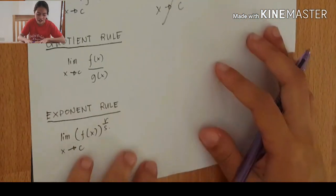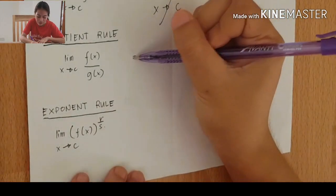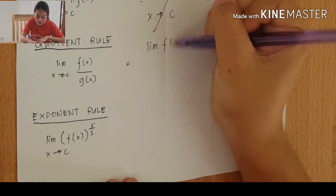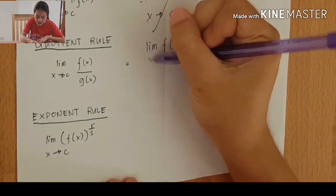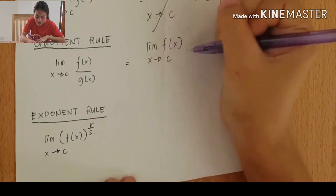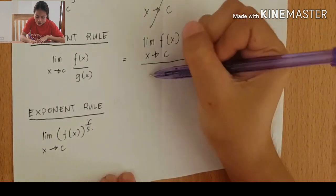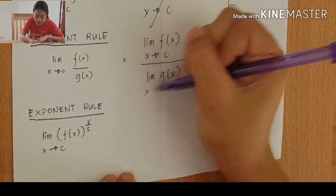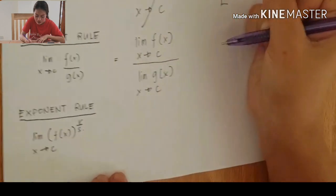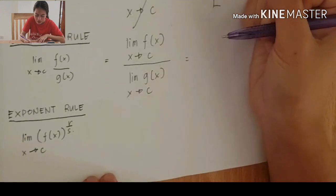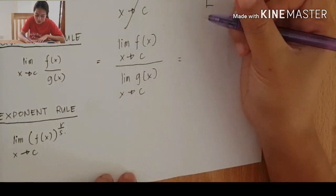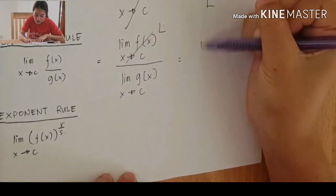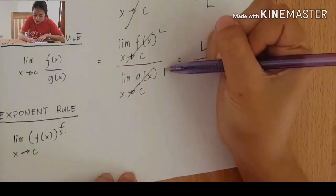The next rule is the quotient rule. The limit of f(x) over g(x) as x approaches c equals the limit of f(x) over the limit of g(x), which equals L over N.